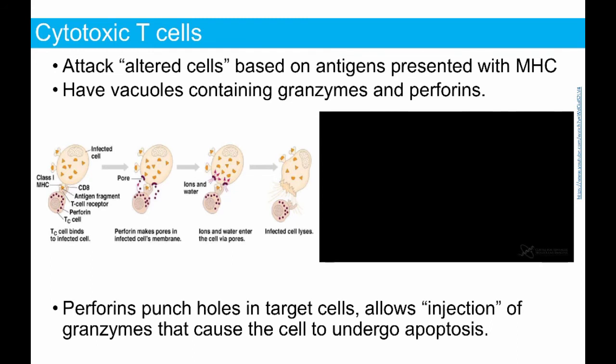You have binding between the receptor on the cytotoxic T cell and the antigen, and you have tons of these now because of clonal expansion. These T cells develop vacuoles that contain molecules called granzymes and perforins. The granzymes, once released, are going to form a pore in the membrane of the offending cell, and the perforins are going to punch a hole into the cell. That leads to apoptosis on the part of the pathogen.